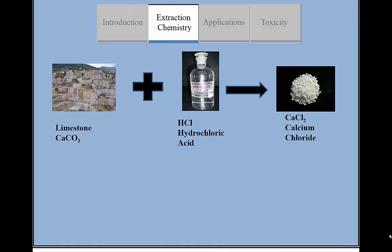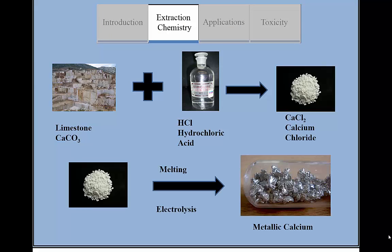Metallic calcium can be extracted from a multi-step process. Limestone is dissolved in hydrochloric acid to form calcium chloride salts, which are then taken and heated up until it's molten. The molten salt, or fused salt, can then be electrolyzed to form metallic calcium.